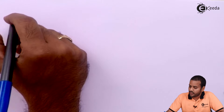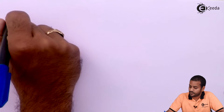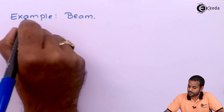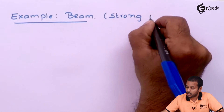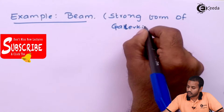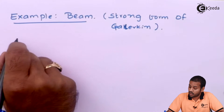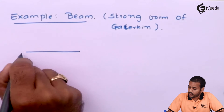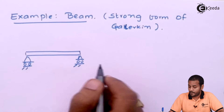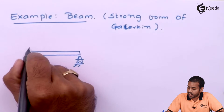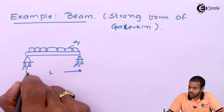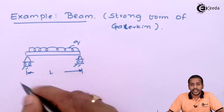Let us take a 1D Euler-Bernoulli beam example. We will apply the strong form of Galerkin. Let us take an Euler-Bernoulli beam in which both ends are simply supported, with a UDL of load Q throughout the beam, and let the length of the beam be capital L. So what is the governing equation for this beam?